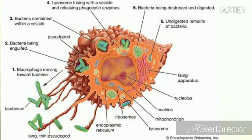In step four, lysosome fuses with the vessel and releases phagocytic enzymes. The lysosome, which contains digesting enzymes, attaches to the vessel containing the bacteria and shoots its phagocytic enzymes. In step five, the bacteria is destroyed and digested due to these lysosomal enzymes.